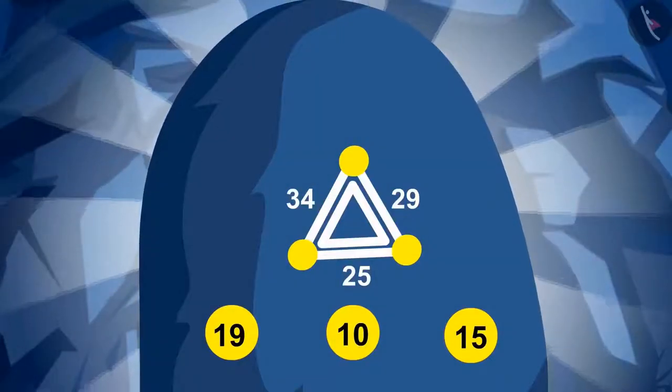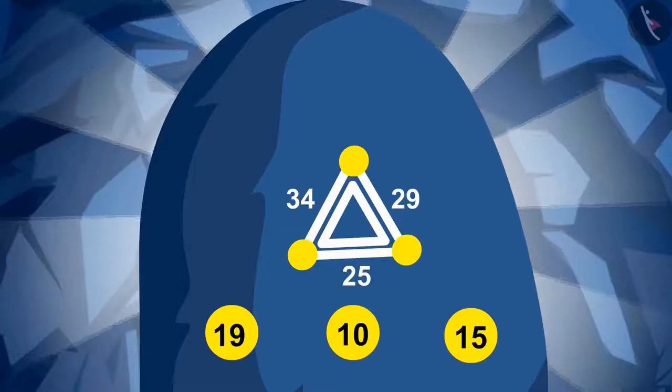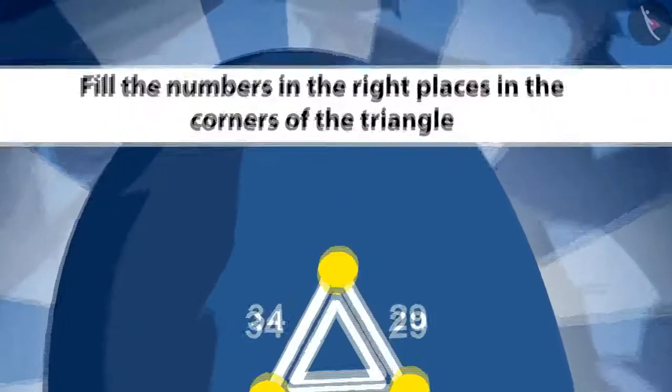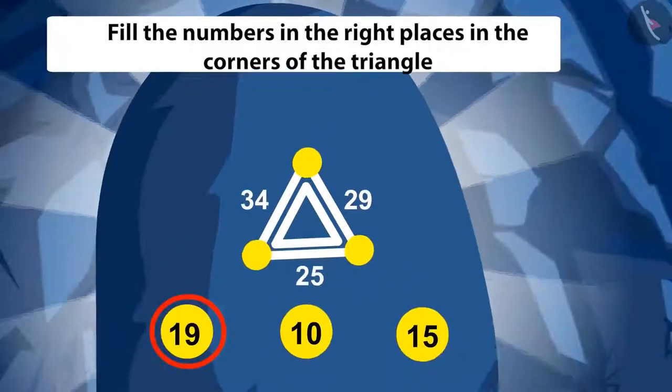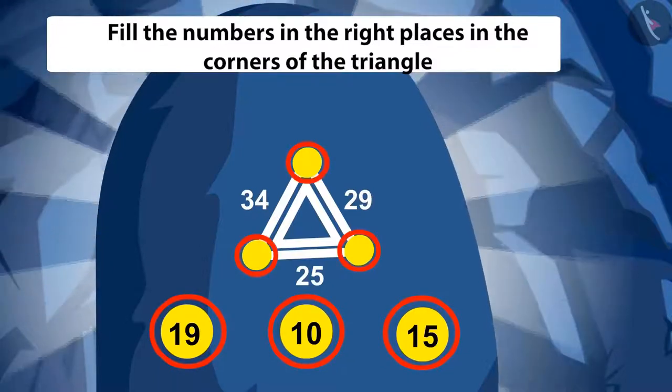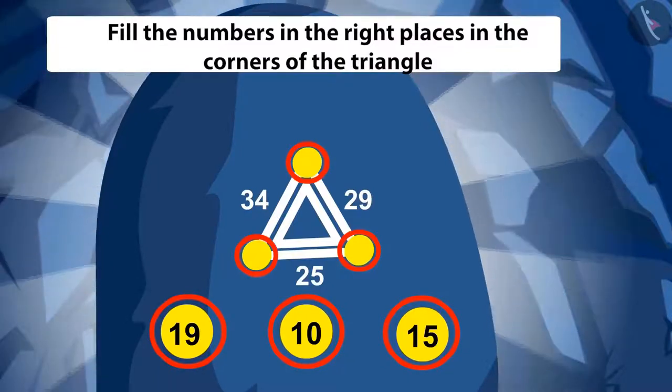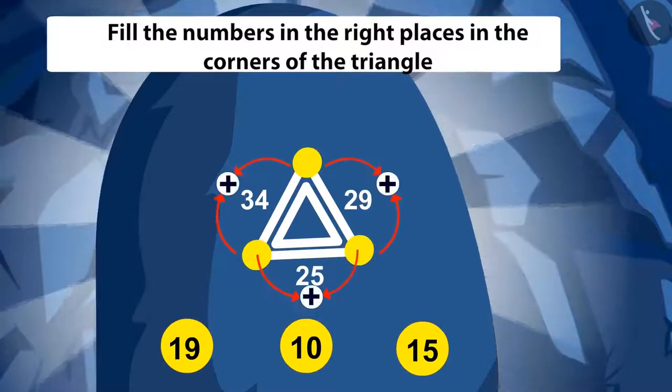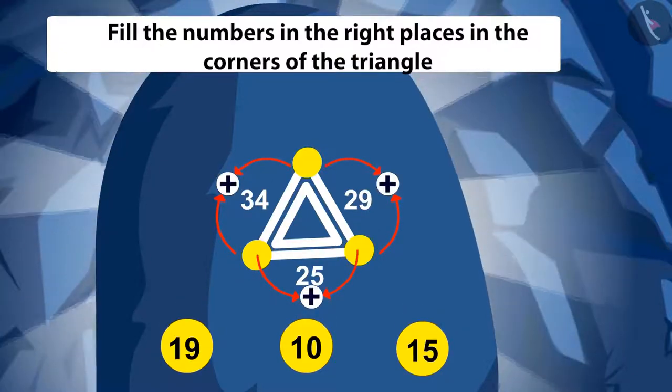Suddenly, Tufan can see this question above that mark. Fill the numbers in the right places in the corners of the triangle in such a way that the addition of the numbers in each of the two corners is equal to the number written in between them.